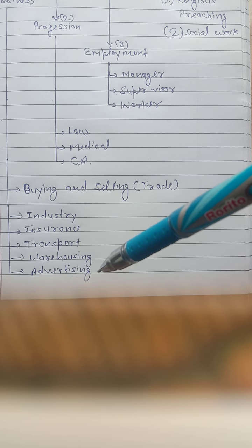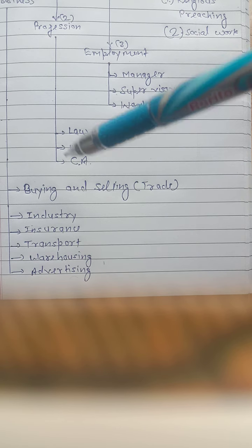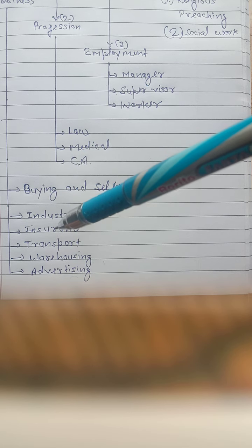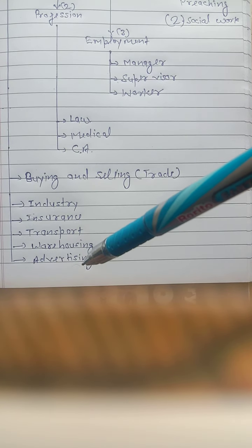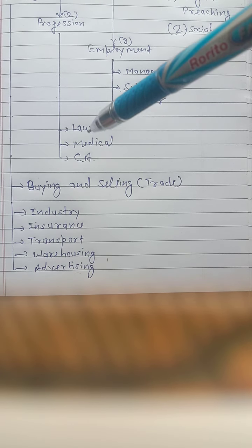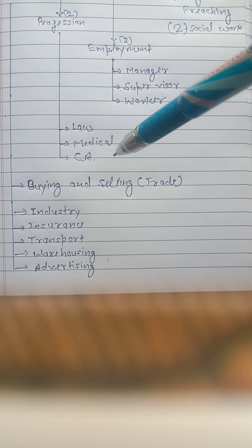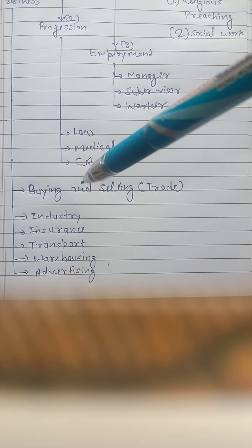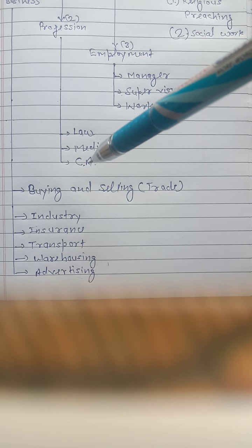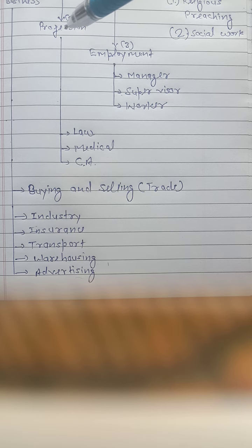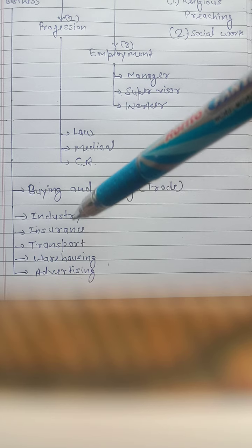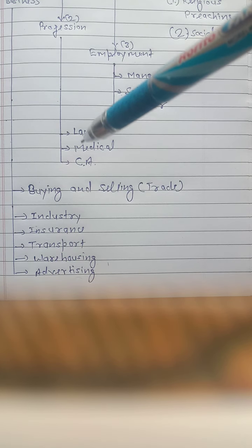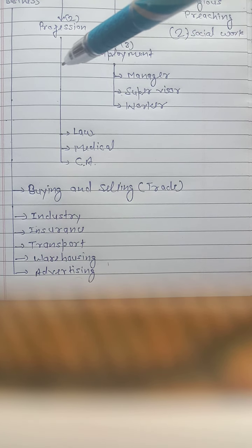Through effective advertising, we can buy or sell anything and reach all goods and services to the customers. These are the main business activities. These three — business, profession, and employment — are the economic activities.